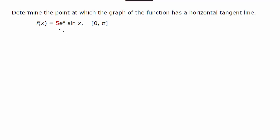The function's a little bit challenging. It's got some transcendentals in it. f of x equals 5e to the x sine x, and we're looking at the interval from 0 to pi. So we're only going to find a point in the interval from 0 to pi where this function has a horizontal tangent line.